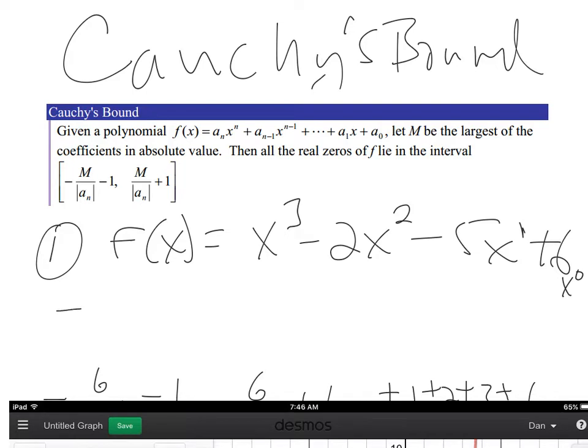So applying Cauchy's bound, we're going to say negative 6 over 1 because the leading coefficient is 1 and the largest coefficient is 6. Then we subtract 1. That will be the lower limit of the possible bounds. For the upper one, it's going to be positive 6 over 1 plus 1. That tells me all the possible bounds will be between negative 7 to positive 7.